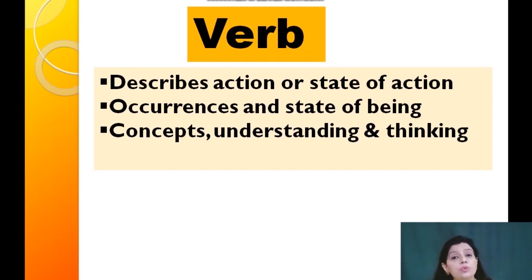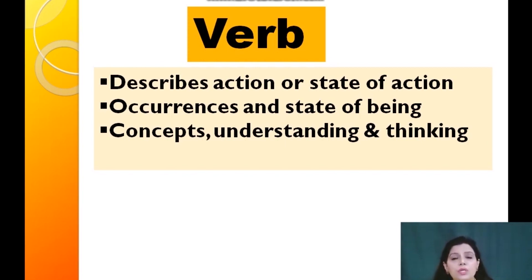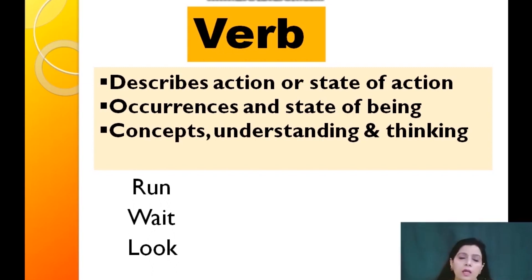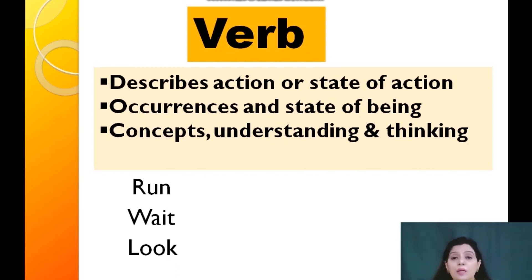We will understand with examples why verb is the brain of the sentence. If someone says 'run' — this is a single word — can you understand something from it? You might be given a precaution, there's some danger, and you hear 'run' — 'bhago'. We cannot say this is a complete sentence; it does not fully satisfy the definition of a sentence. But it gives you a complete message — a conveyance, an instruction, a precaution, an order. Like when players are standing in a line and a whistle sounds — the order is 'run' — and they start running.